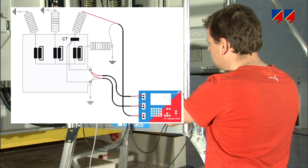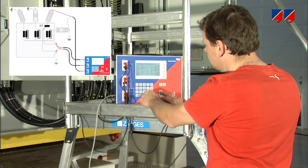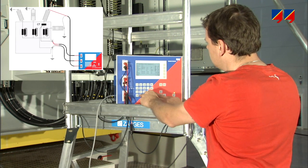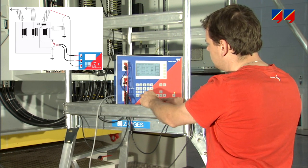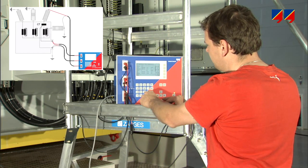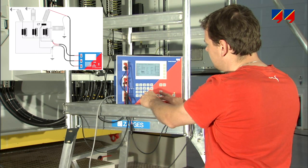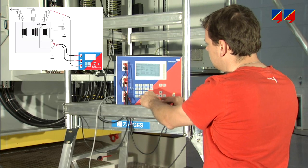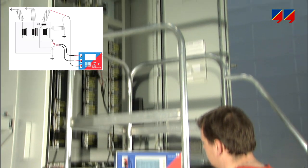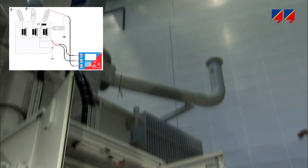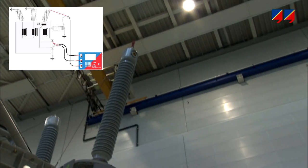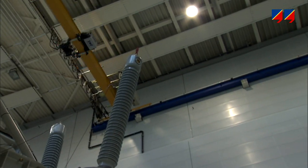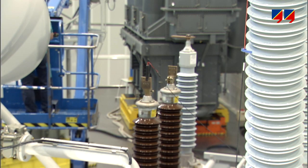CT Analyzer's measurement principle is perfect for this application. It injects into the secondary side of the CT, which is accessible in the transformer's terminal cubicle. For measuring the voltage induced on the CT's primary side, CT Analyzer is connected to the center conductor of the bushing the CT to be measured is installed on, and to the neutral bushing, or to another phase for delta-connected transformers.